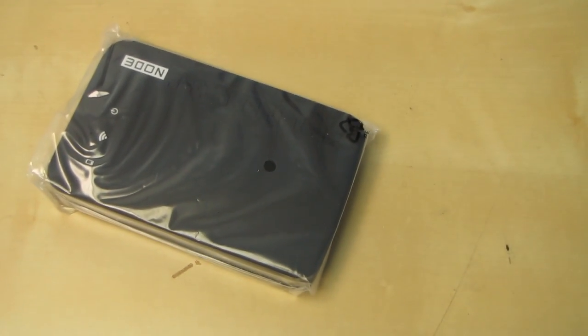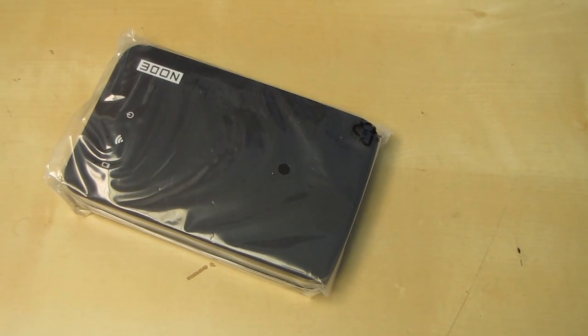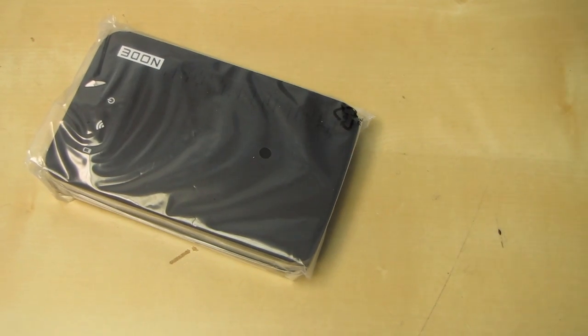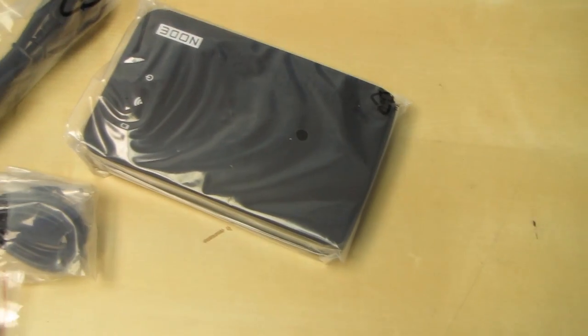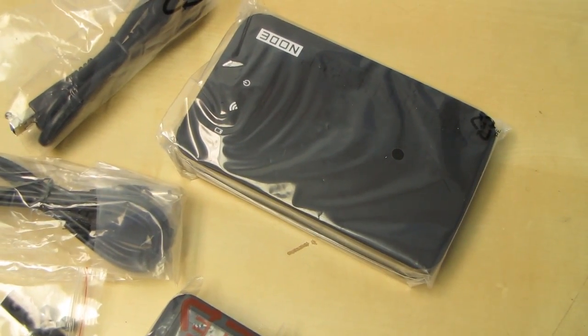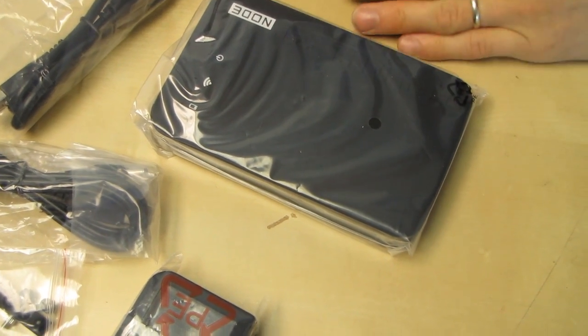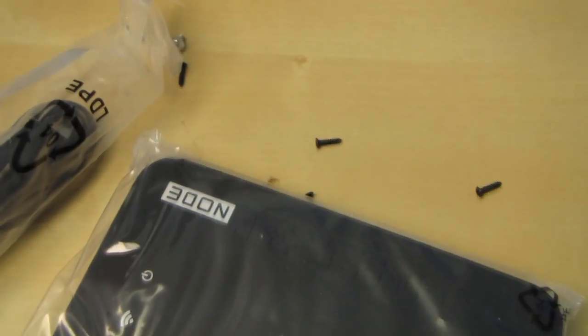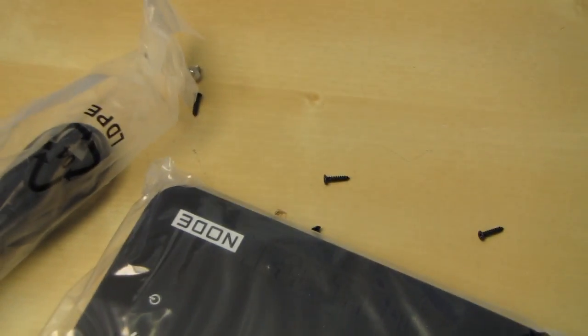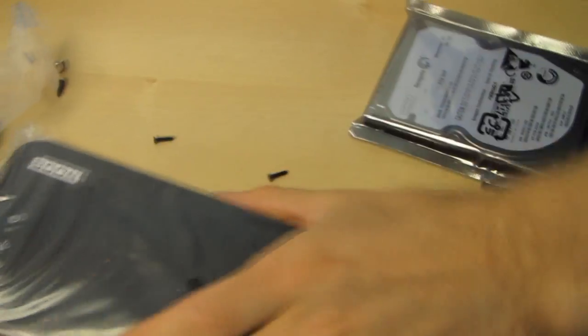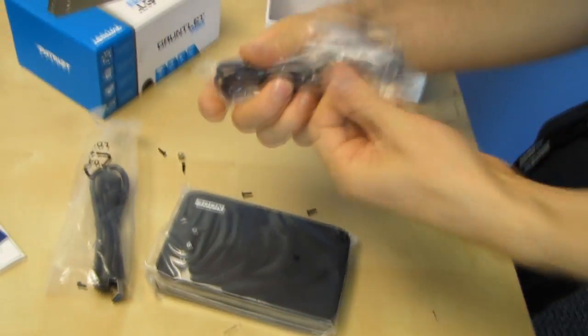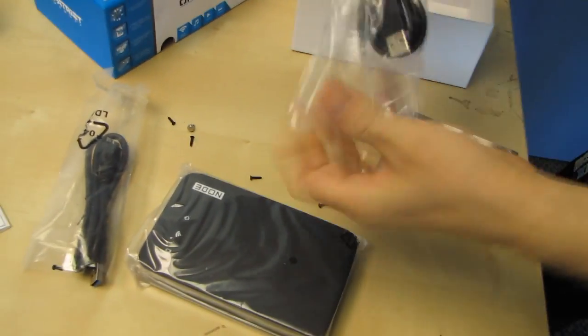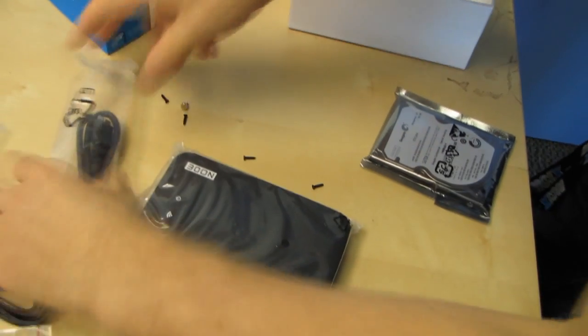So what you do is you get all your accessories and components here, and you take your two-and-a-half-inch drive, which is here, you install it in here, you use a USB connection to drop whatever data you want onto the drive.